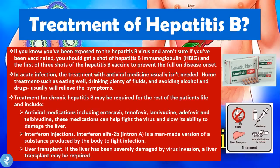Treatment for chronic Hepatitis B may be required for the rest of the patient's life and includes antiviral medications such as entecavir, tenofovir, lamivudine, adefovir, and telbivudine. These medications help fight the virus and slow liver damage. We can also use interferon injections — interferon alpha-2b is a man-made version of a substance the body produces to fight infection. A liver transplant may be performed if the liver has been severely damaged by the virus.